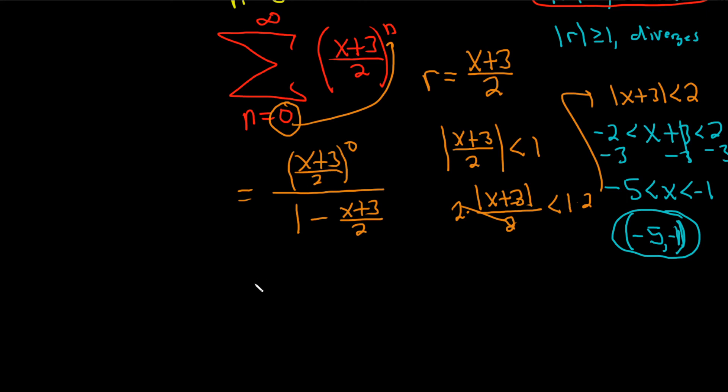The numerator is going to be 1 because anything to the 0 power is 1. And on the bottom, we still have 1 - (x+3)/2.